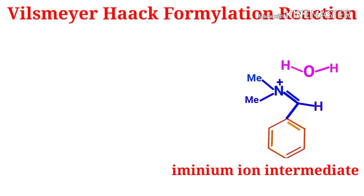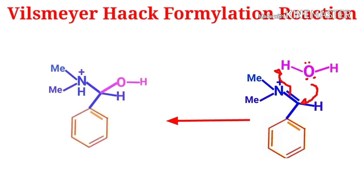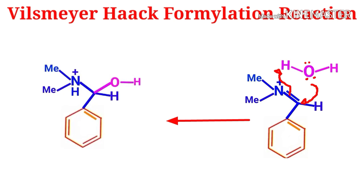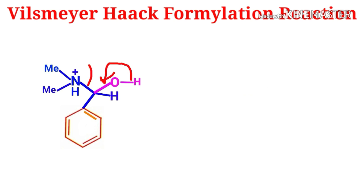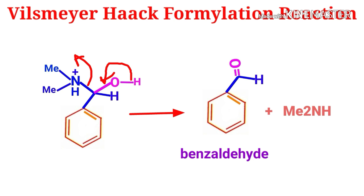When a water molecule is added to the system, the lone pair on the oxygen atom attacks the carbon center, and that bond takes up a proton to give an intermediate structure. Finally, a hydrogen leaves and the dimethylamine group is removed, giving the final product — the aryl aldehyde, in this case benzaldehyde — along with dimethylamine.